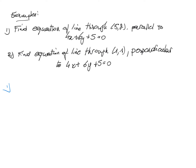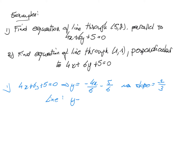For the first problem, we rewrite 4x plus 6y plus 5 equals 0 to find the slope: y equals minus 4x over 6 minus 5 over 6, so the slope is minus 2 over 3. Since the lines are parallel, the other line also has slope minus 2 over 3. Using the point (5, 2) on the line: y minus 2 equals minus 2 over 3 times (x minus 5), which gives y equals minus 2 over 3 times x plus 10 over 3 plus 2, or y equals minus 2 over 3 times x plus 16 over 3.